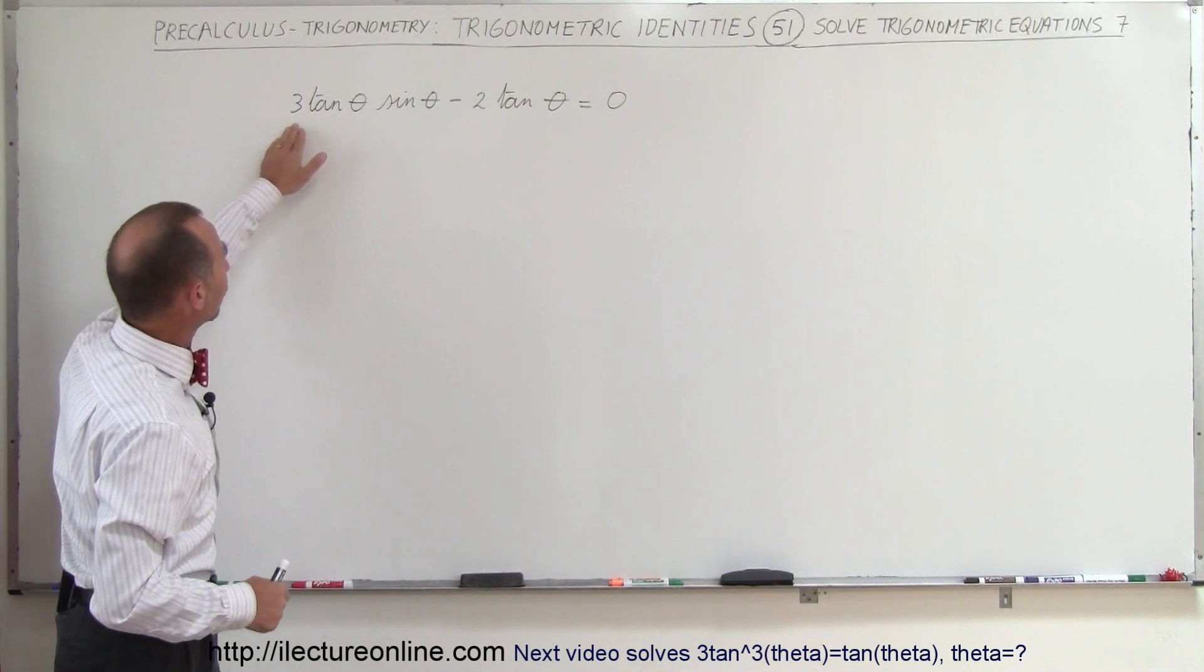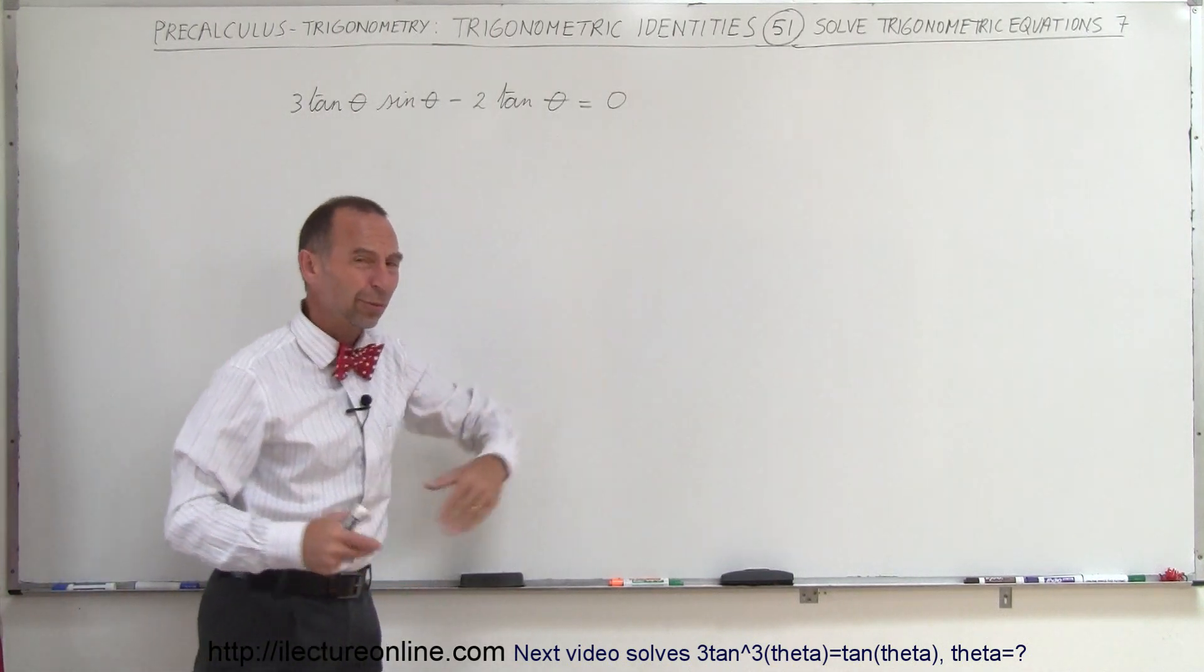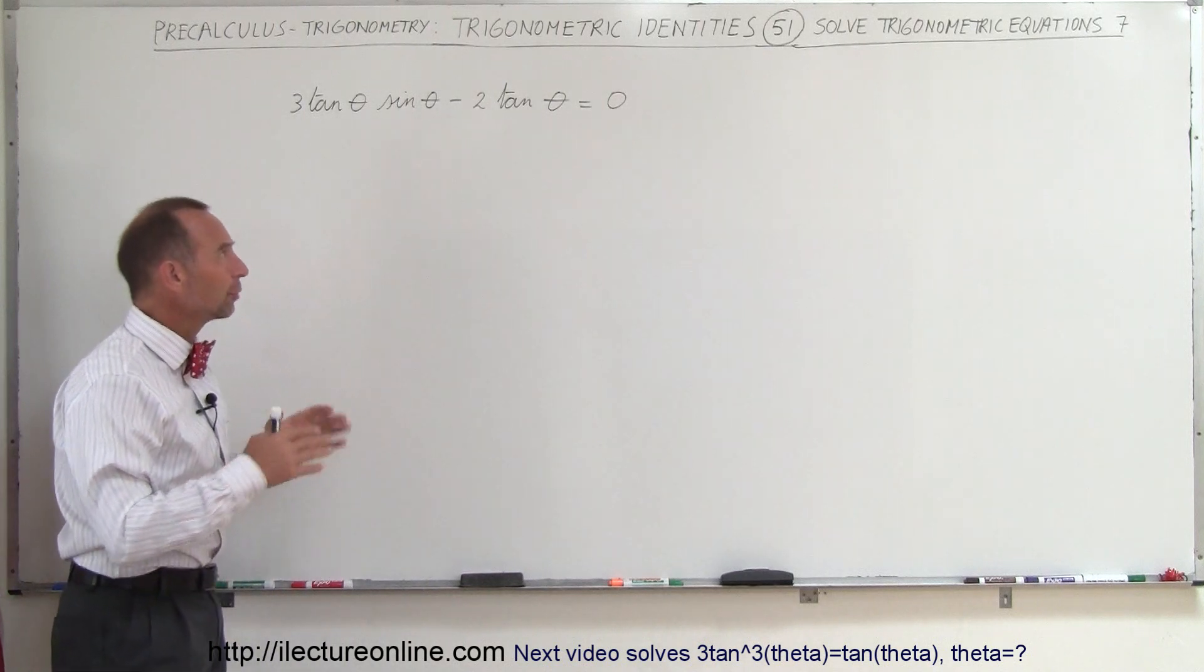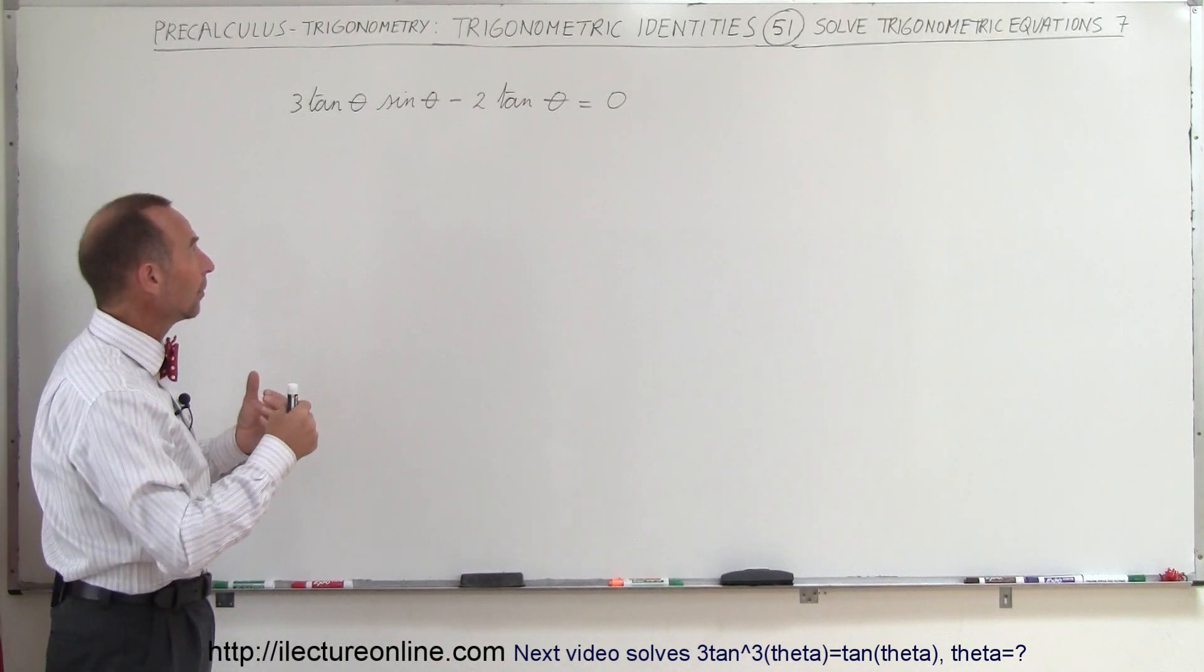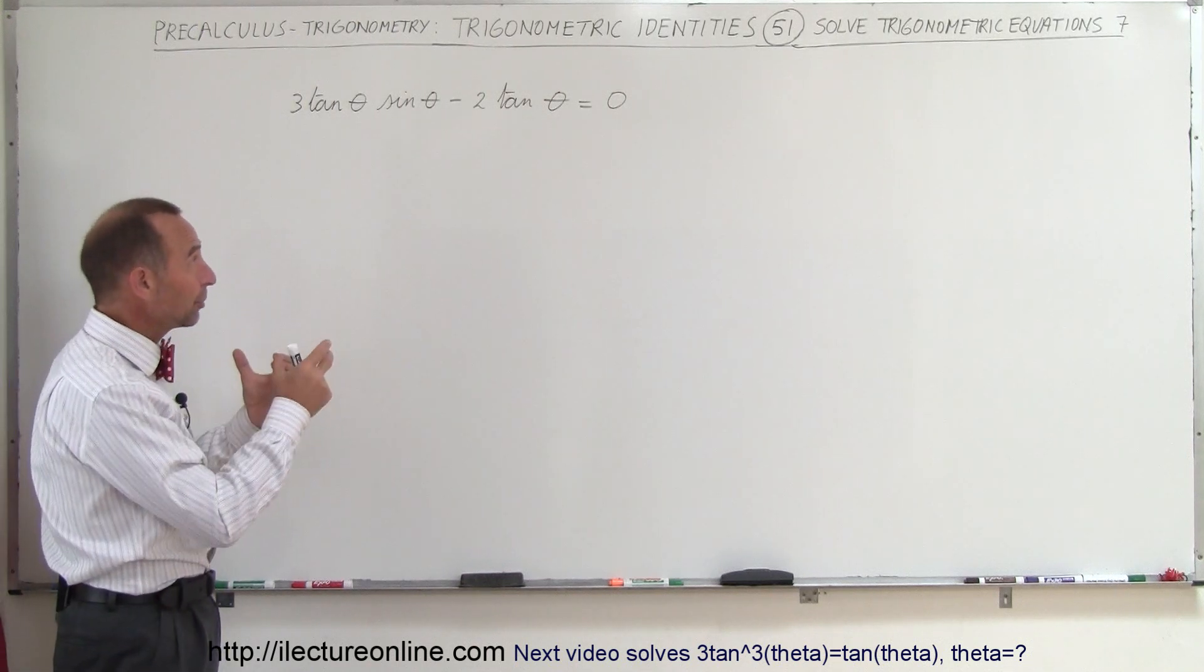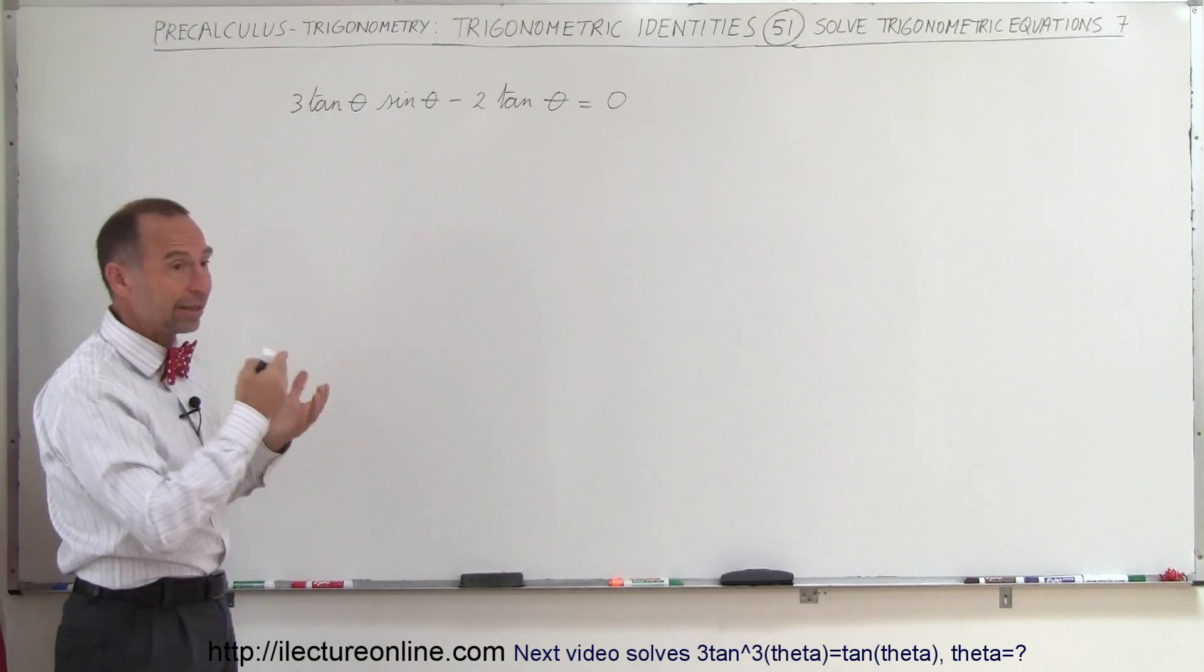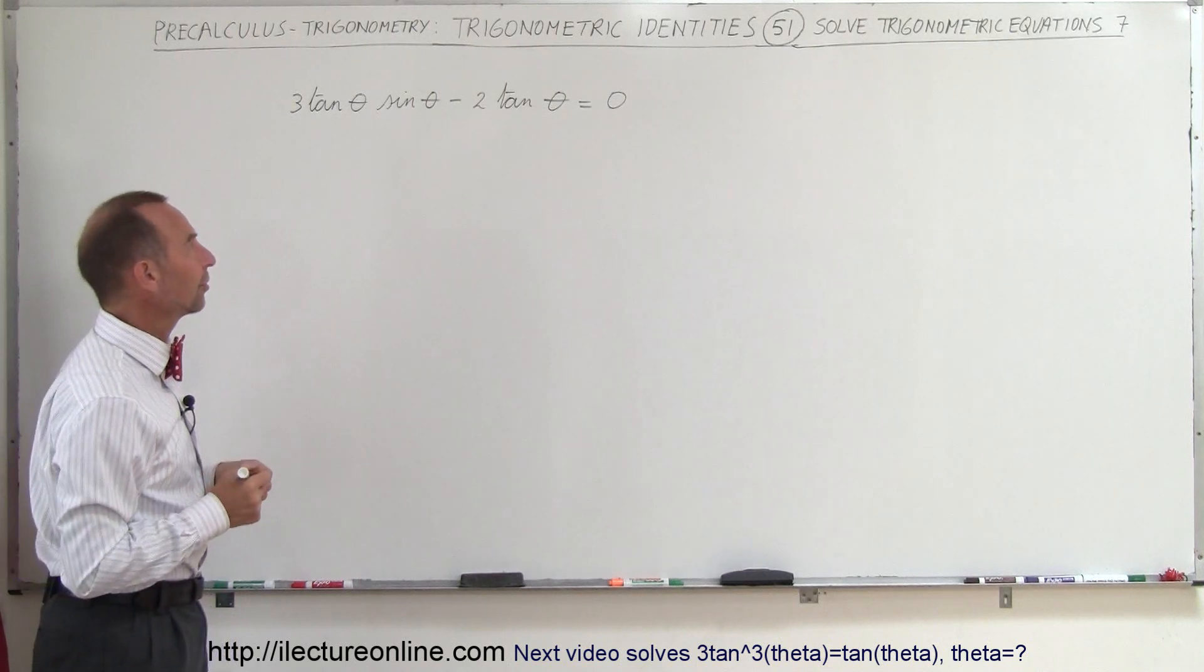Now when we look at it, we have two terms and it's set equal to zero, so we use that same technique where we're going to try to factor. Whenever we have a product, when you multiply two things together set equal to zero, then that means that each of the factors is equal to zero.